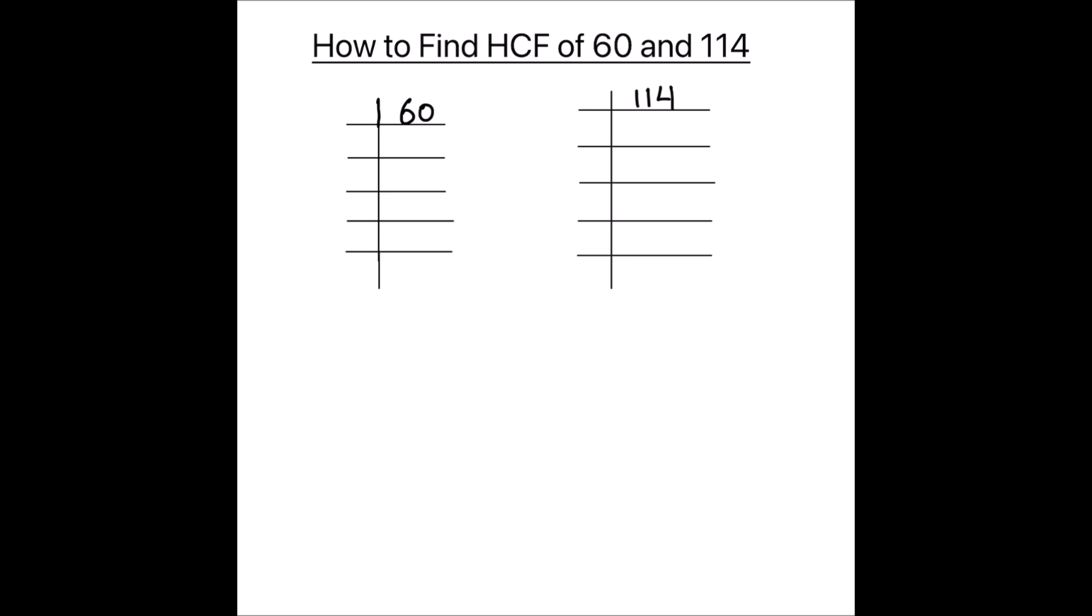So 60 can be easily divided by first prime number 2. So 2 times 3 is 6, 2 times 0 is 0. Again we can divide by 2, 2 times 1 is 2, 1 is remainder, this becomes 10, 2 times 5 is 10.